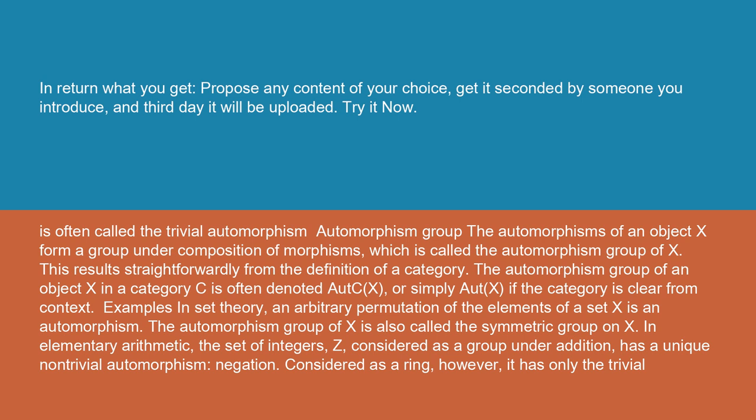Automorphism group: The automorphisms of an object X form a group under composition of morphisms, which is called the automorphism group of X. This results straightforwardly from the definition of a category. The automorphism group of an object X in a category C is often denoted Aut_C(X), or simply Aut(X), if the category is clear from context.